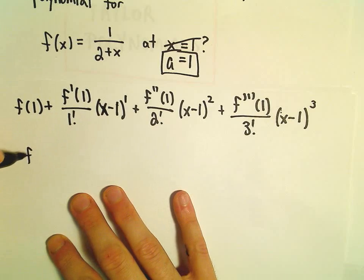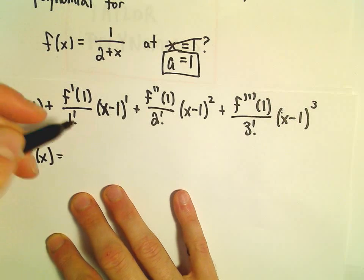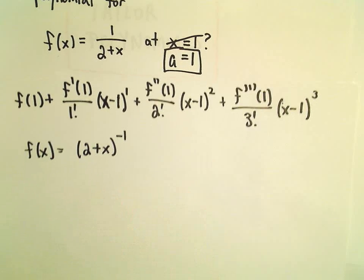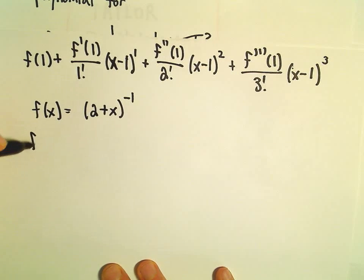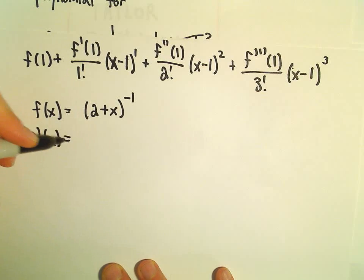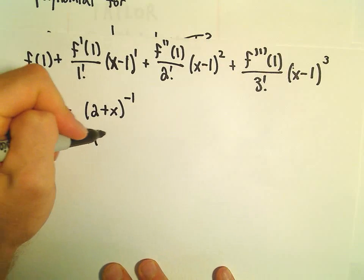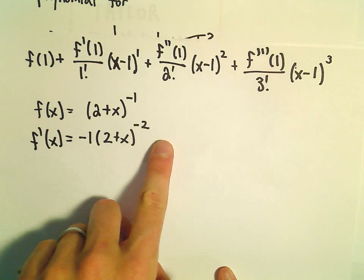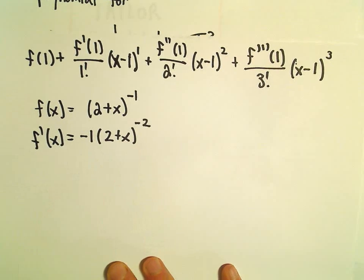Okay, so our function f of x here is 1 over 2 plus x. I'm going to write this as 2 plus x to the negative first for taking derivative purposes. So f prime of x will get negative 1 times 2 plus x to the negative second. We've got to use the chain rule, but the derivative of the inside is just going to be times 1.